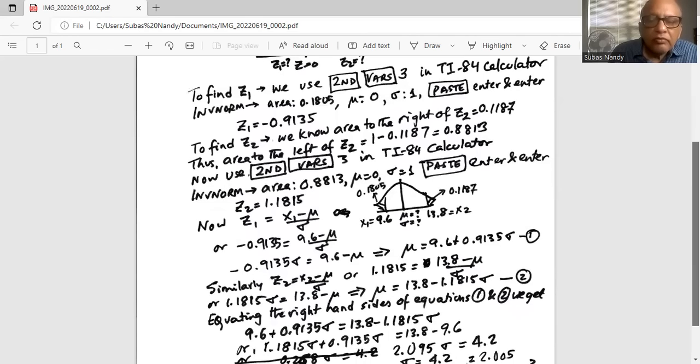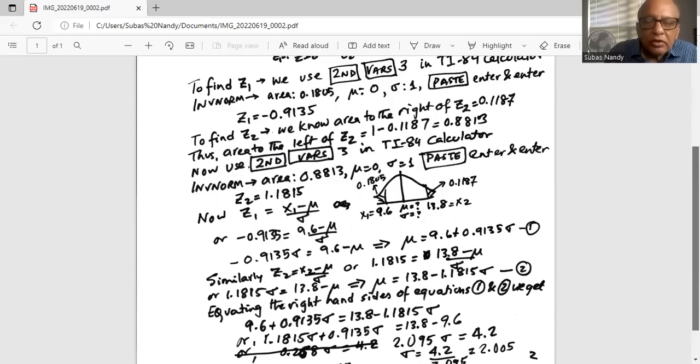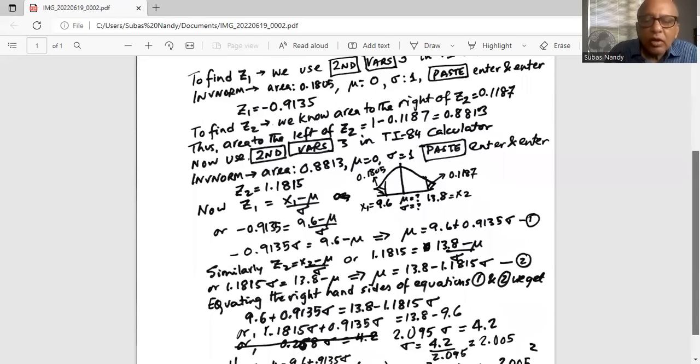Now if you look at equations 1 and 2 on the left hand side of the equal sign we have mu. Since the left hand sides are equal we can equate the right hand sides and we will get 9.6 plus 0.9135 sigma is equal to 13.8 minus 1.1815 sigma.